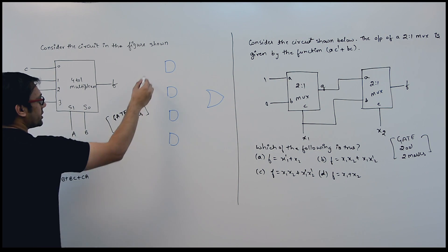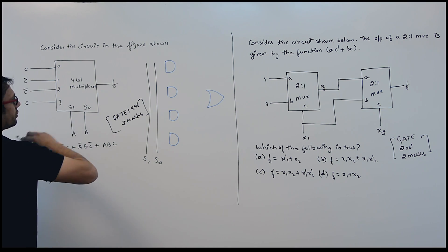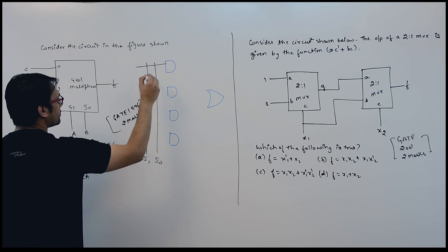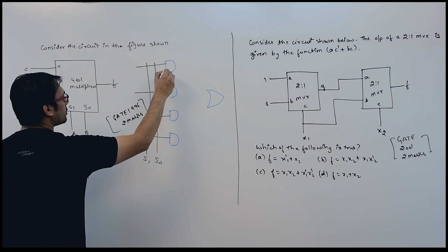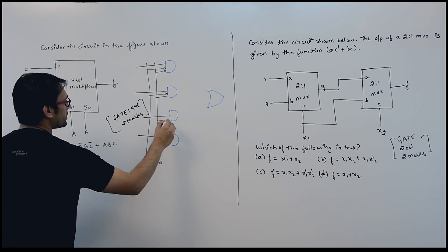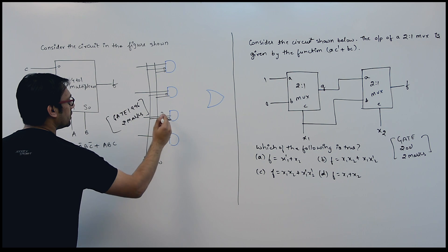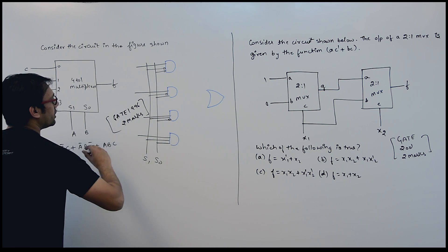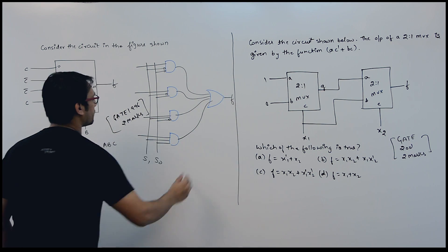We have two select lines S0 and S1. The first select line is S0 complement and S1 complement. The combinations for the four AND gates are: S0 complement and S1 complement, S0 complement and S1, S0 and S1 complement, and S0 and S1. The outputs of these AND gates are given to the OR gate so that we can get the function f.